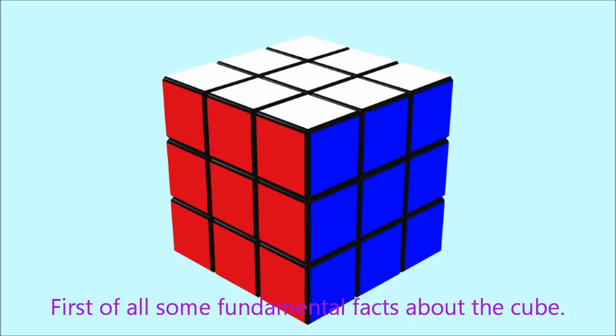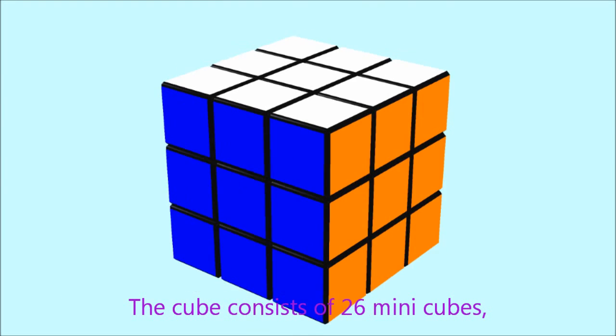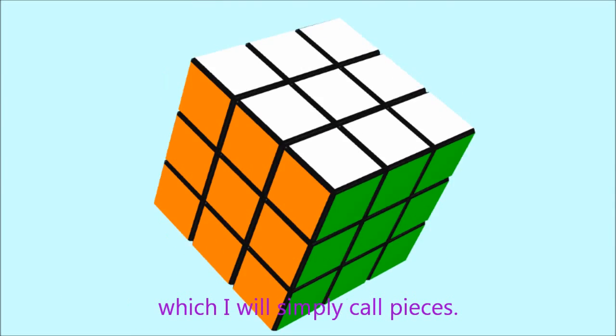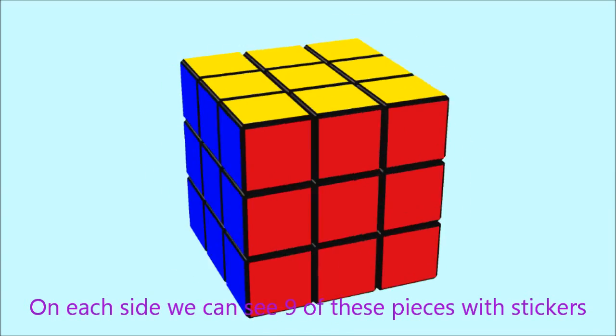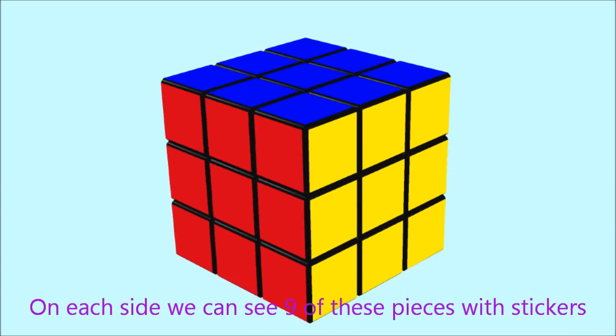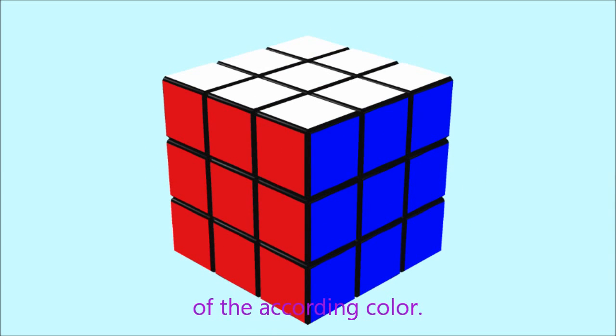First of all, some fundamental facts about the cube. The cube consists of 26 minicubes, which I will simply call pieces. On each side we can see 9 of these pieces with stickers of the according color. There are 3 different types of pieces.